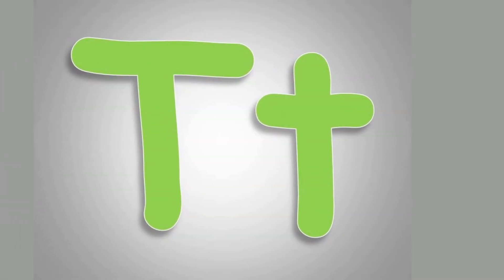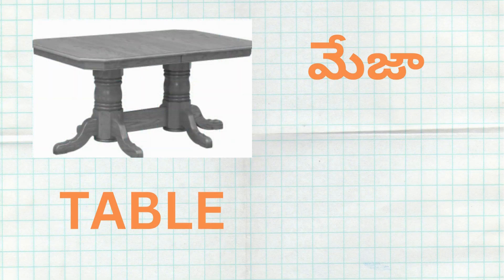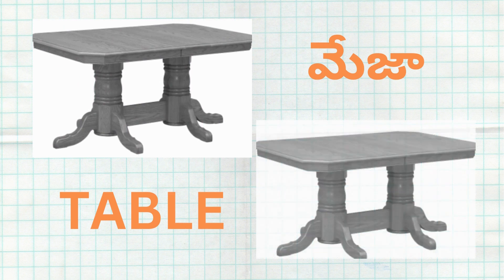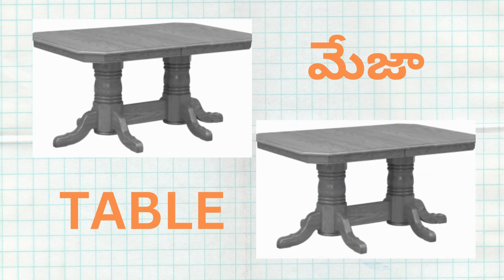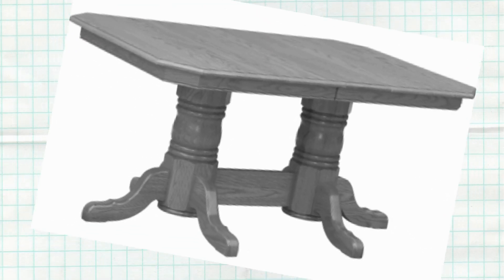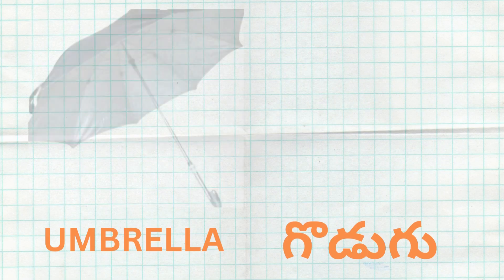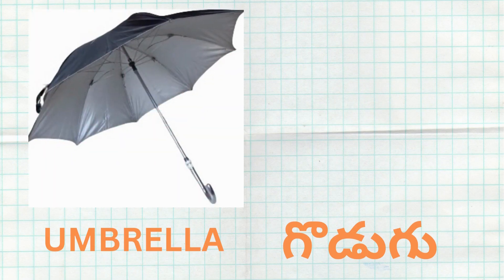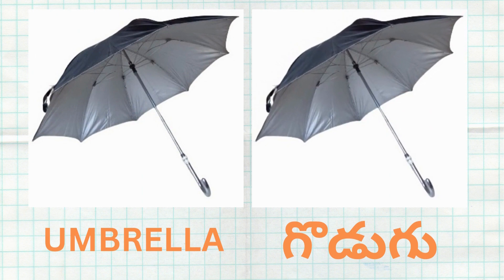S for Sun. Sun Ante Naringa. T for Table. Table Ante Meja.